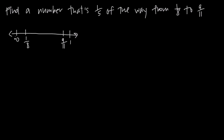I've drawn a number line here where we have 0 on the left and 1 on the right, so we've really zoomed in to the portion of the number line between 0 and 1. I've gone ahead and graphed 1 eighth and 9 elevenths. We know that 1 eighth is 1 eighth of the way between 0 and 1 — if we divided that area into 8 sections, 1 eighth would be at the end of the first section, pretty close to 0. Similarly, 9 elevenths would be at the end of the 9th of 11 sections, pretty close to 1. So we have 1 eighth and 9 elevenths as our endpoints.